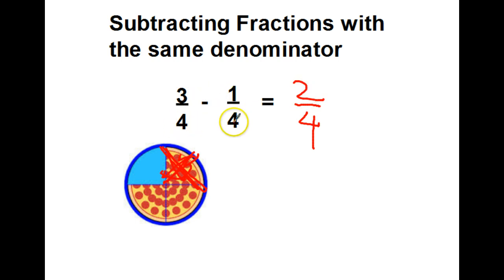Denominator was 4, denominator was 4, denominator stays 4. I try to tell the kids denominator doesn't do diddly, so it's going to stay as a 4.